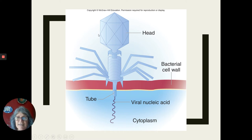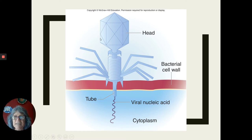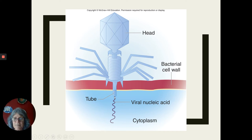Bacteriophages are complex viruses — the top head portion is icosahedral, and below that is a helical structure. Both are capsomeres — part of the protein coat — combined, so complex. Their spikes are modified as anchors. They anchor on the bacterial cell wall and work like a syringe, injecting this tube through the cell wall and inserting the nucleic acid into the bacteria. The protein coat then just falls off and the nucleic acid gets to work.